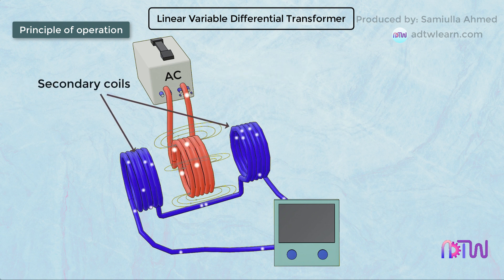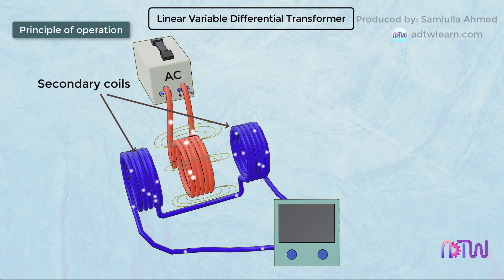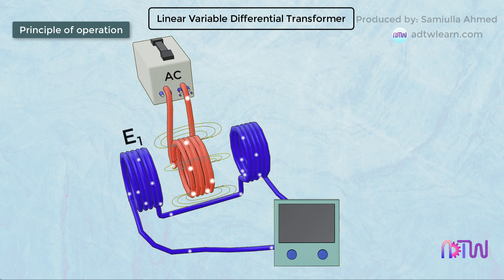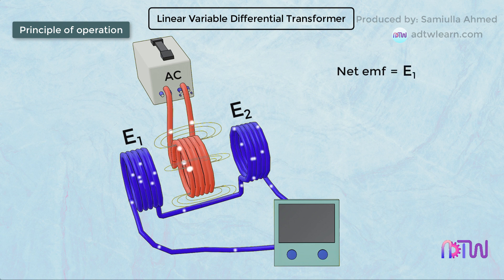It further induces the current in the secondary coils according to Faraday's law of induction. Thus EMF is generated in one of the secondary coils (E1) and the EMF generated in the other secondary coil (E2).